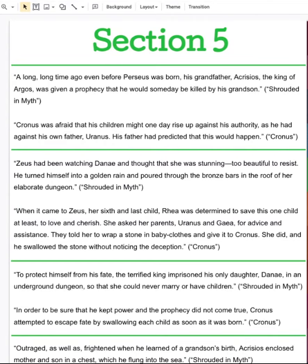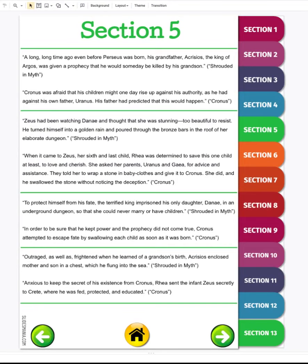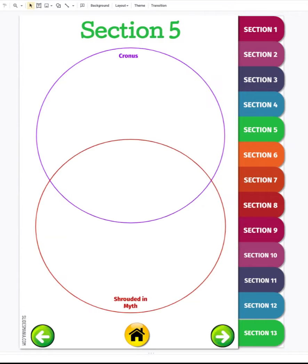And our second quote is: Cronus was afraid that his children might one day rise up against his authority, as he had against his own father Uranus. His father had predicted that this would happen. So if we're thinking about those two quotes, we're trying to find something that's similar between the two.